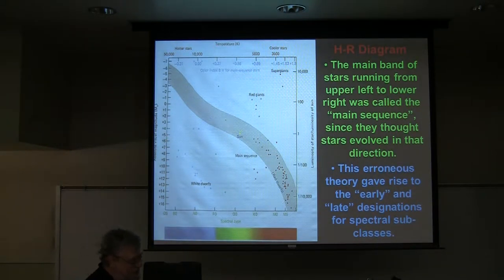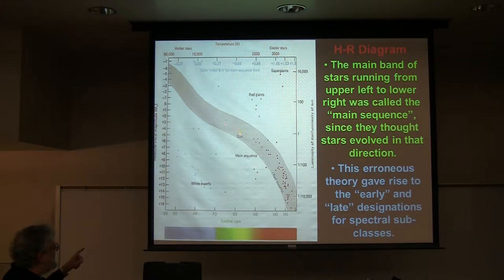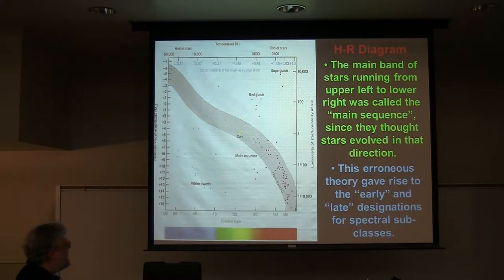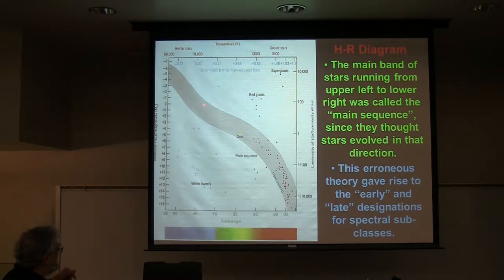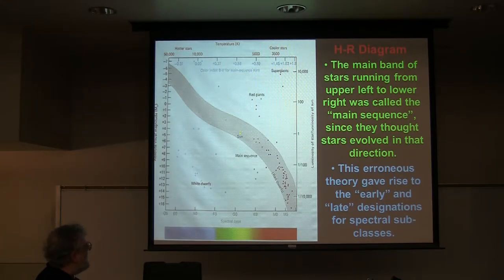They called this the main sequence because they made a mistake. They thought they had discovered how stars evolved — that stars would start out as big hot blue ones and gradually, as they used up their fuel, dwindle down and fade out as red dwarfs. When you build a fire, it starts out hot and bright and eventually cools down to smoldering embers. So they called it a sequence because they thought stars started up here and wound up down there. That is not correct. We still use the term because we inherited their early work and terminology.